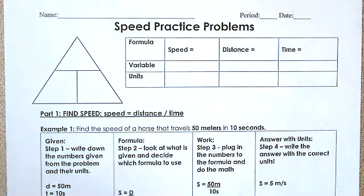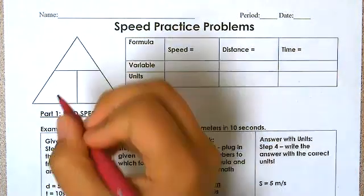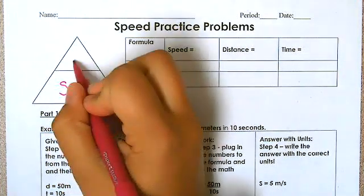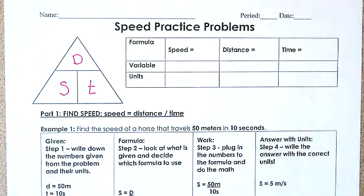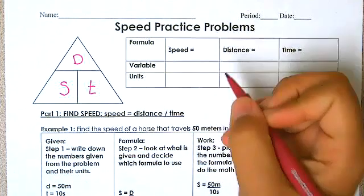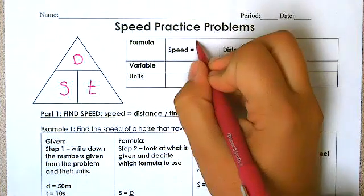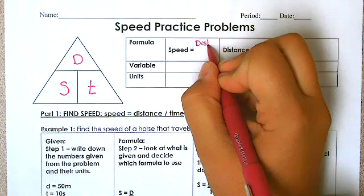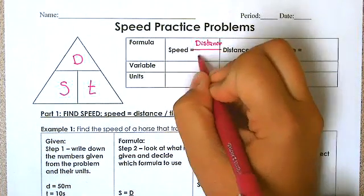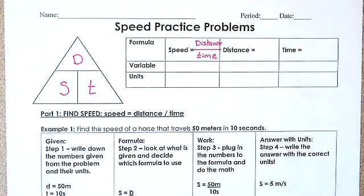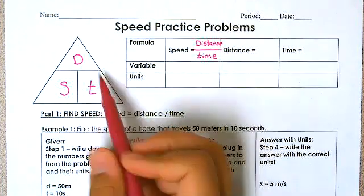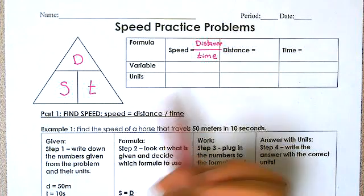The first thing we're going to do is fill in our triangle to help us with our math formulas. Speed equals distance over time, so speed equals distance divided by time. This math triangle helps us figure out our formulas.